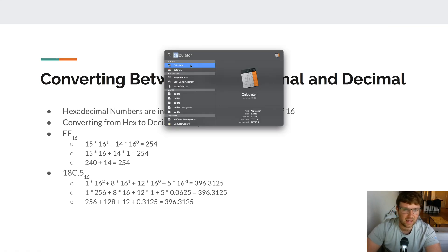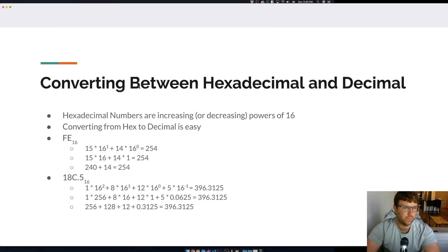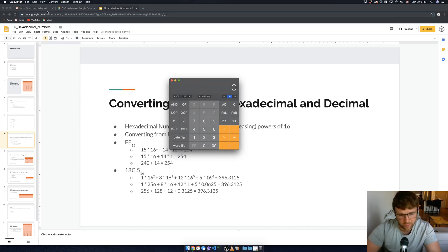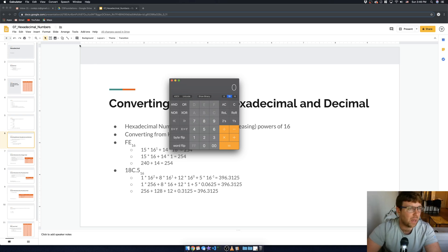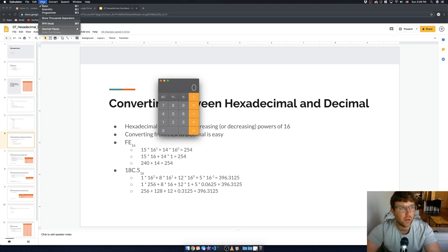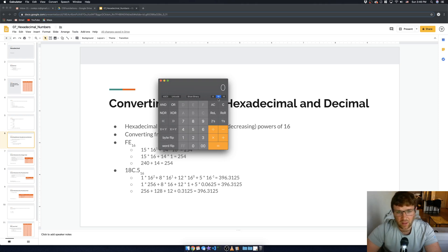On both Mac and Windows the built-in calculator has support for hex, octal, and binary numbers. I'm on a Mac here. By default you might see the basic calculator, but if you go to View you can switch to Scientific mode for things like sine, cosine, and logs, or switch to Programmer mode. In Programmer mode, by default it's set to base 10.